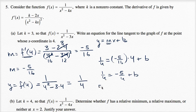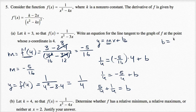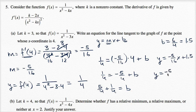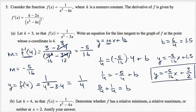Adding five fourths to both sides: five fourths plus one fourth equals b, so b is equal to six fourths, or three halves, which is 1.5. Therefore our equation is y equals negative five over sixteen times x plus three halves.